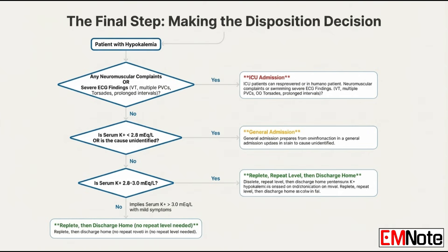Let's talk disposition — who goes home and who needs a bed? There are two major red flags for ICU admission. The first is respiratory: any severe neuromuscular complaint where you're worried about the diaphragm and impending respiratory failure. If they can't breathe, they need the ICU. The second red flag is cardiac: severe ECG findings — runs of non-sustained V-tach, lots of PVCs, torsades, or really prolonged intervals. Any major electrical instability means ICU.